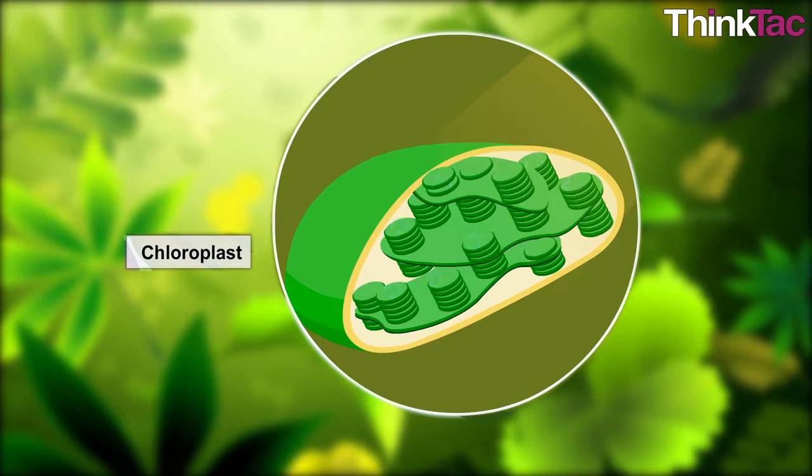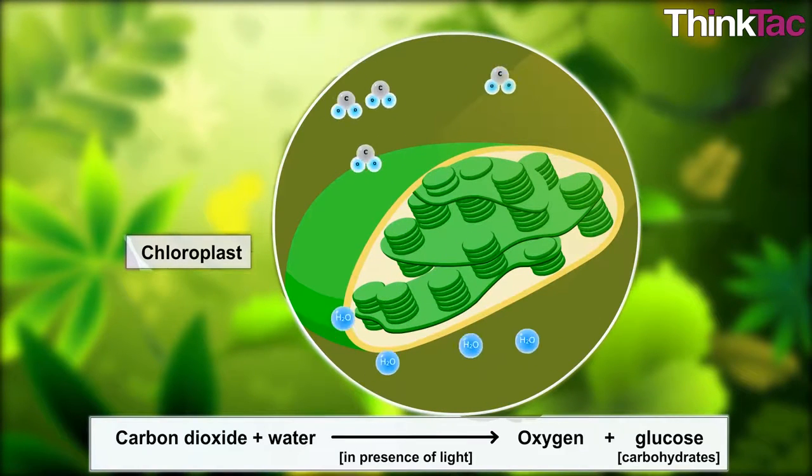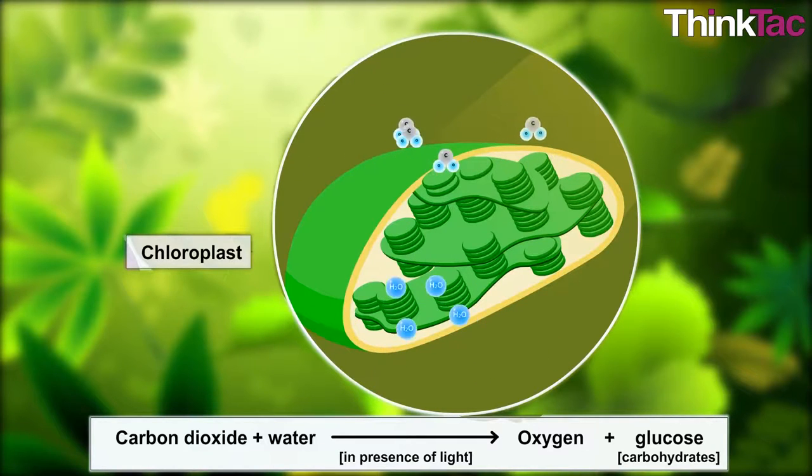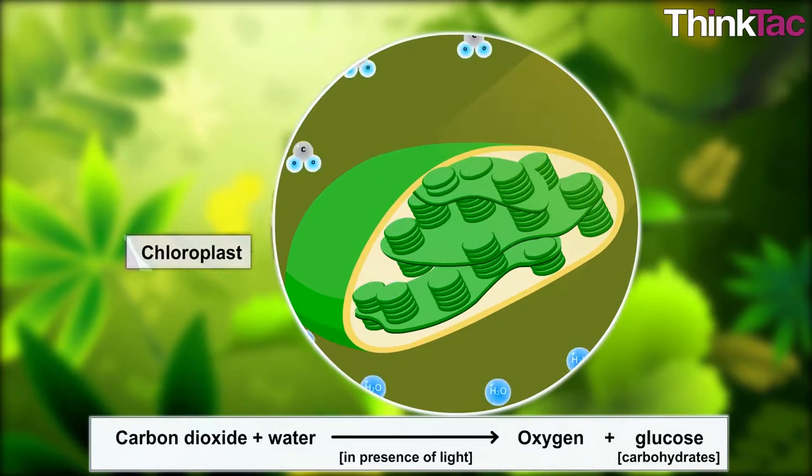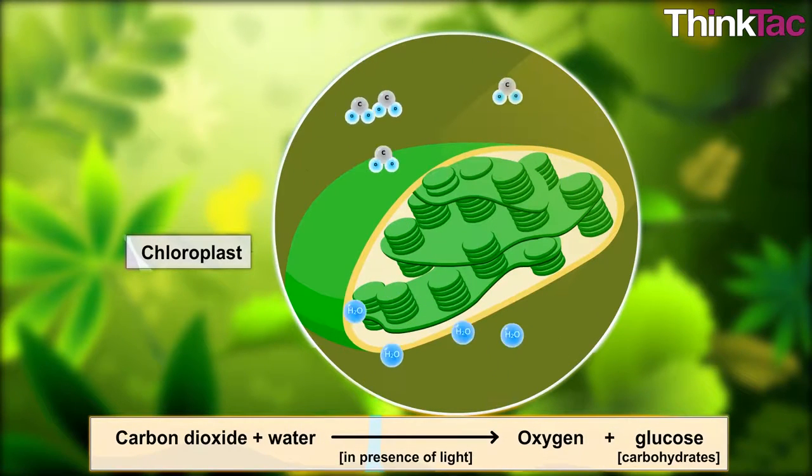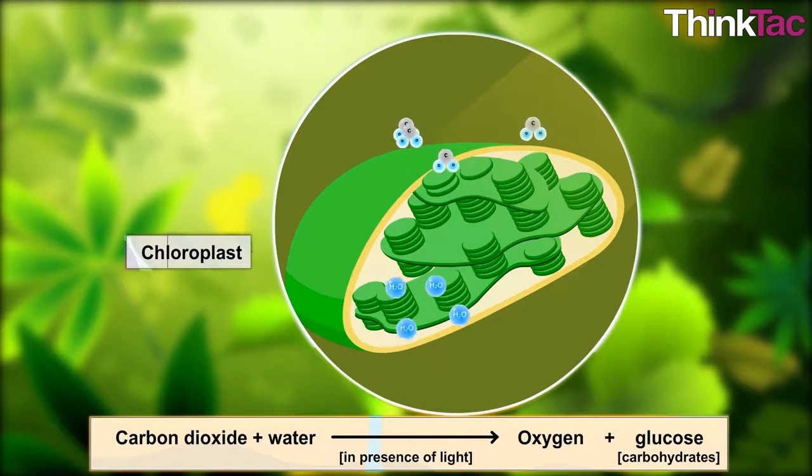This overall reaction is very simple, though a lot of complex reactions must occur in a coordinated manner to produce carbohydrates. To produce glucose, which is C6H12O6, a minimum of 30 proteins work together within a complicated membrane structure.